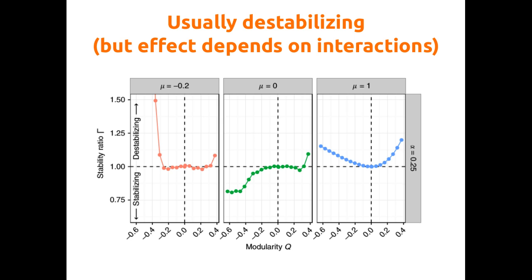What you do is get the spectrum of the network with a modular structure and then randomize the network, preserving mean, variance, and correlation. You then compare the effect. If the stability ratio is larger than one, the structure is destabilizing; if it is lower than one, the effect is stabilizing.